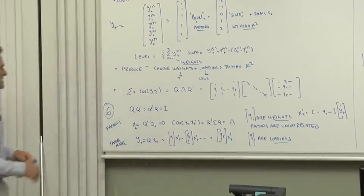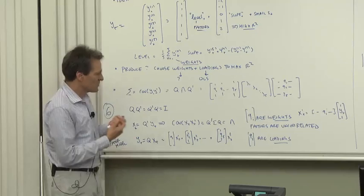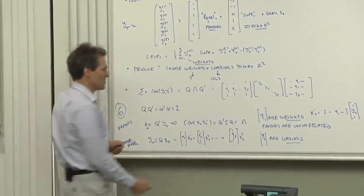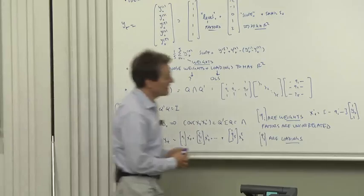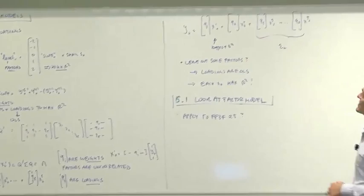So the eigenvalue decomposition gives you uncorrelated factors. And the columns of q serve two purposes, they are both the weights by which you form factors from the data, and they are the loadings that tell you how much each data item moves when a factor moves. Furthermore...